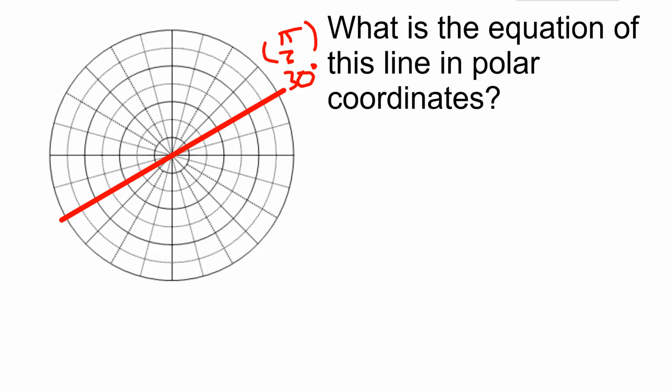This is at 30 degrees, or π/6. Every point on here—this point is (2, 30°), this point out here is (-5, 30°) because we're going the opposite direction. Every point has a theta value of 30 degrees. So the equation is θ = 30° or θ = π/6 in radians.